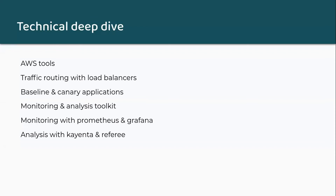We're now going to move into the technical deep dive into the technologies used by ARIA to carry out a canary deployment. We'll start the section by looking at the AWS tools that we incorporated into ARIA that allow it to deploy and configure the canary infrastructure. We'll then examine how ARIA implements traffic routing using load balancers. After that, we'll look at the computing resources deployed by ARIA to run the baseline and canary versions of our target application. We'll finish the deep dive by looking at the monitoring and analysis toolkit configured by ARIA, including the monitoring tools Prometheus and Grafana and the analysis tools Kayenta and Referee.